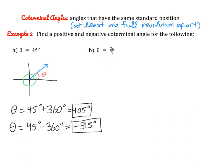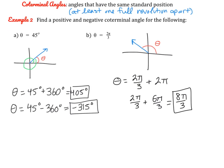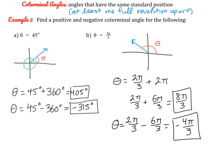Let's do the same for theta equals 2 pi over 3. Since the angle is in radians, instead of adding 360 we add 2 pi, because 2 pi is a full revolution in radians. 2 pi over 3 plus 6 pi over 3 gives us 8 pi over 3. That's another measurement that has the same terminal side, so it looks exactly the same as 2 pi over 3 when drawn in standard form. For a negative coterminal angle, we subtract 2 pi: 2 pi over 3 minus 6 pi over 3 gives us negative 4 pi over 3.